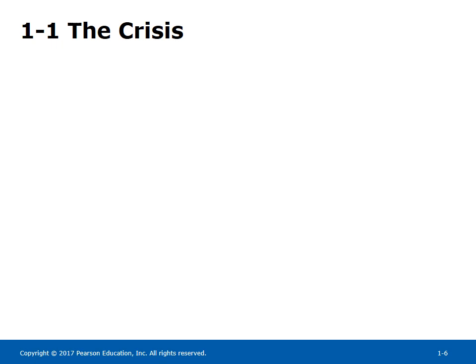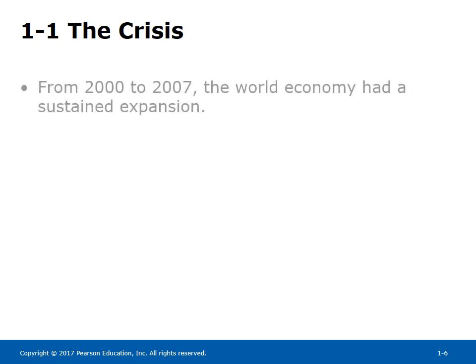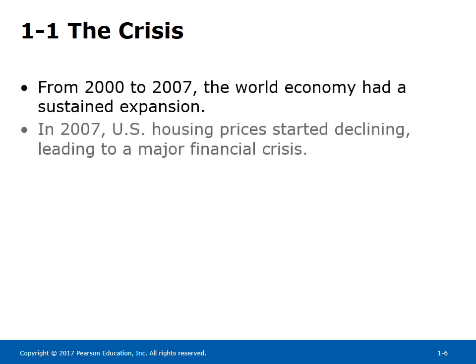The Crisis: From 2000 to 2007, the world economy had a sustained expansion. In 2007, US housing prices started declining, leading to a major financial crisis. The collapse of the housing crisis caused major problems for banks because people stopped paying their mortgages as the value of their houses became less than the mortgages they had. Banks had bundled mortgages into complex securities packages which could not be valued easily. Banks began to collapse and other banks were unwilling to lend to them. This caused the financial crisis.